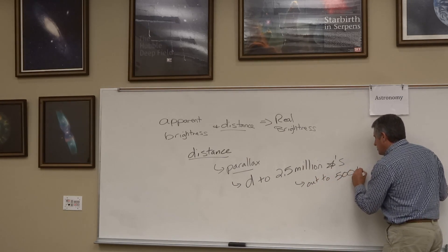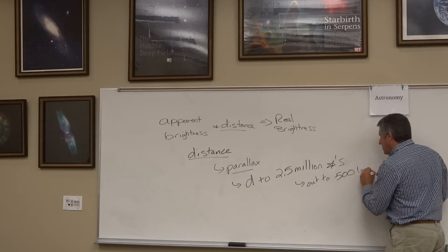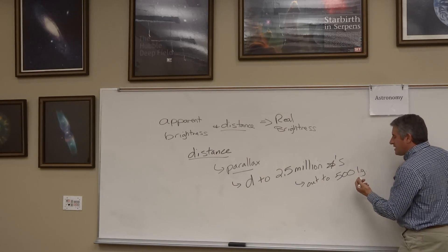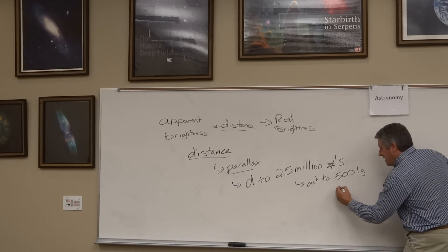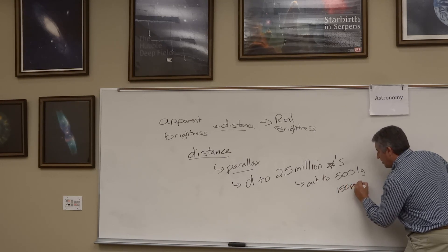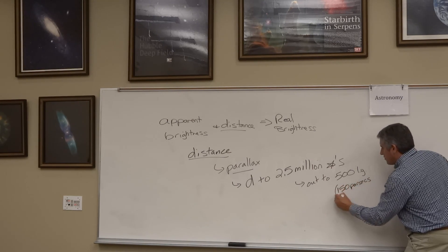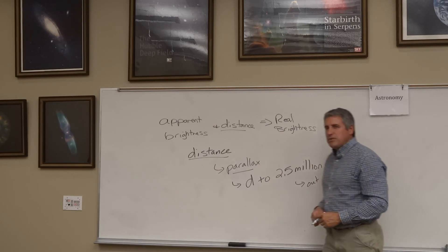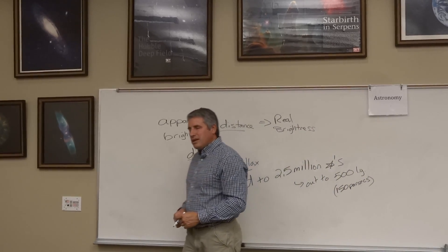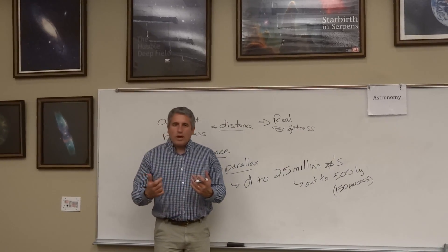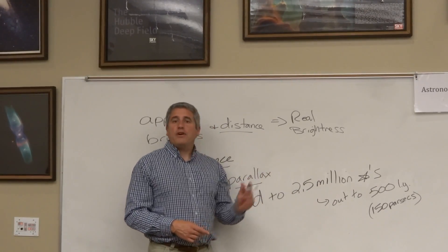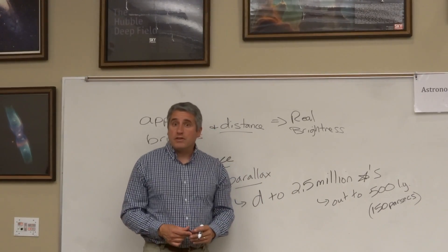To use another term from astronomy, another unit is called parsecs. This is about 150 parsecs, or 500 light-years — a parsec being about 3.26 light-years. Either way, there are 2.5 million stars within 500 light-years of the Earth.